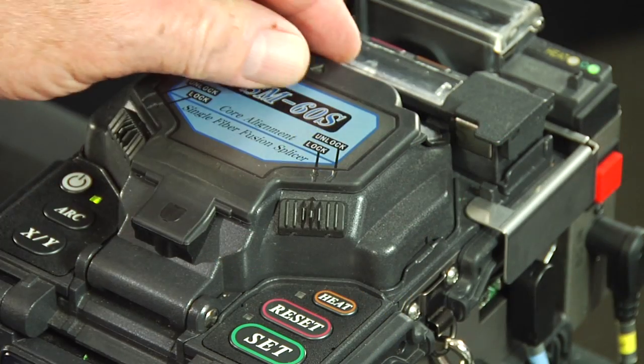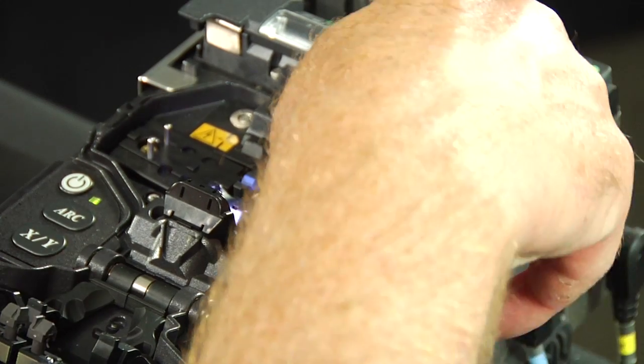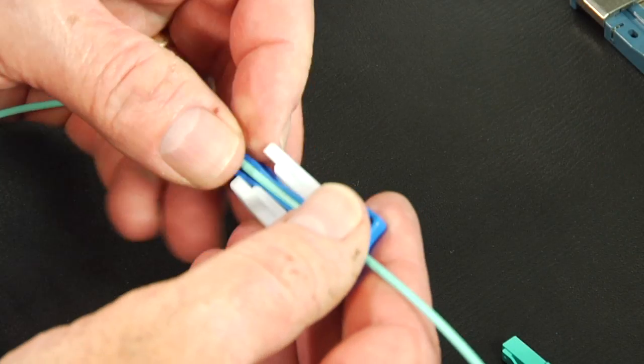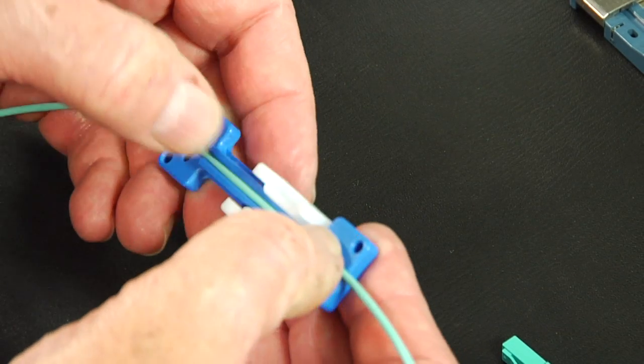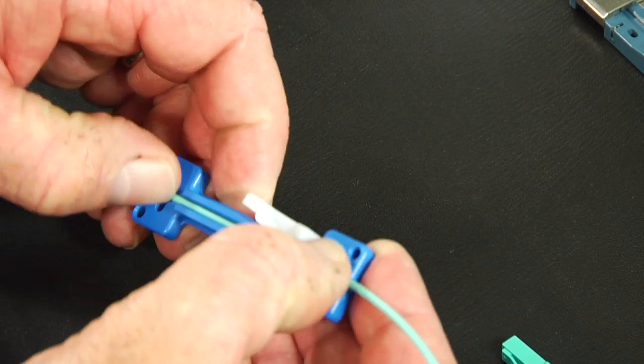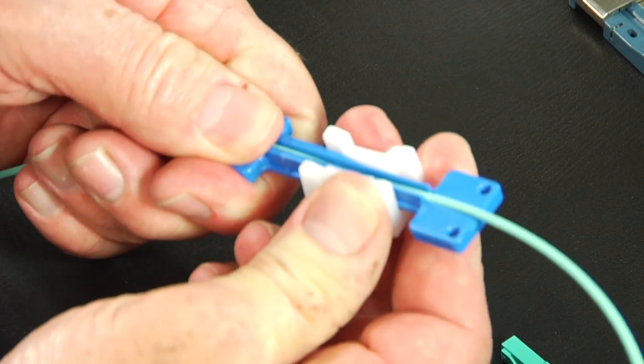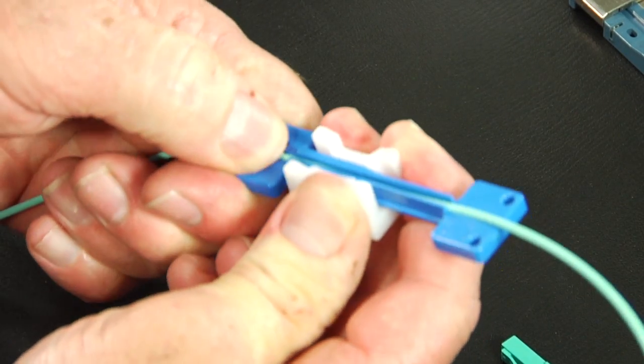Place the Fuse Connect connector body holder into the right side of the fusion splicer. Measure 10 inches from end of 2 millimeter cable and place cable into the 2 millimeter cable clamp. Slide the clamp to tighten cable down.